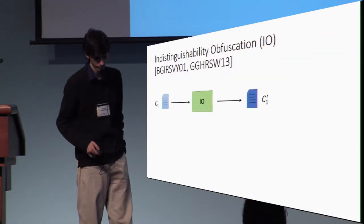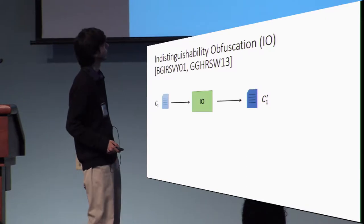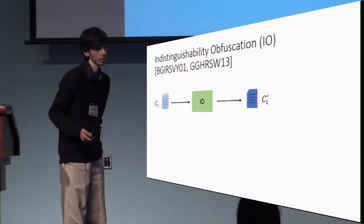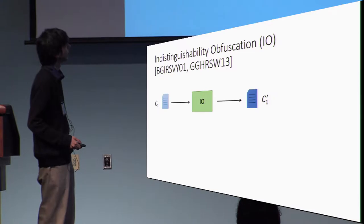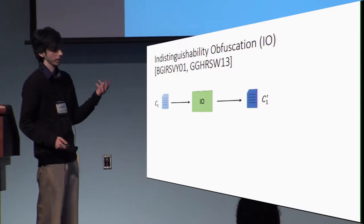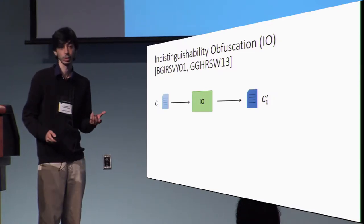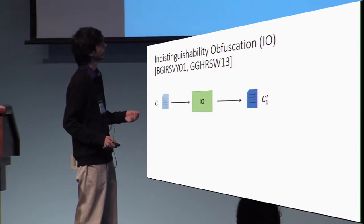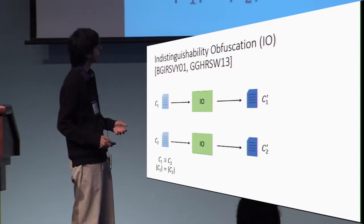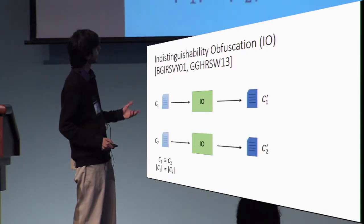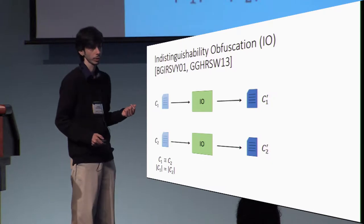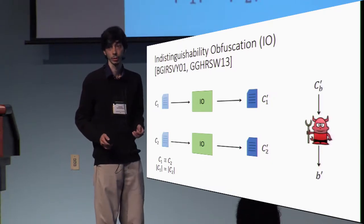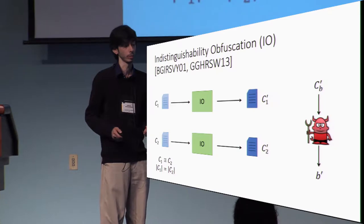Let's define what Indistinguishability Obfuscation, or I.O., is. It was first proposed by Barak et al. in 2001, and basically says that it's an algorithm that takes as input a circuit and outputs a functionally equivalent circuit. For security, we say that for any two functionally equivalent circuits of the same size, an adversary shouldn't be able to distinguish between the obfuscation of one or the other.